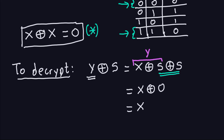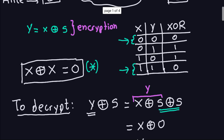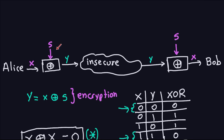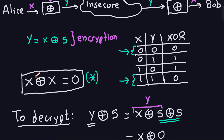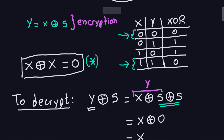So that's why the process of encryption and decryption is exactly the same. To encrypt, you add this string of zeros and ones to the plaintext. To decrypt, exactly the same thing: you take the ciphertext and add the string of characters S. So that's why it works. This is an important property of this XOR operation: when you do X XOR X, you always get zero.